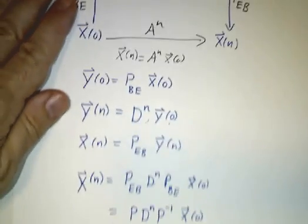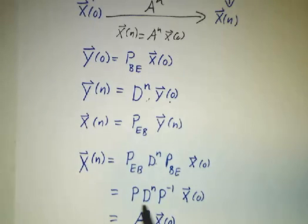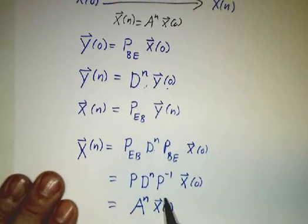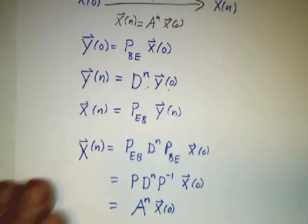Because you don't know how to figure out what A to the n is unless you diagonalize. To figure out A to the n, you have to write it as P d to the n P inverse. And that's essentially going around our square.